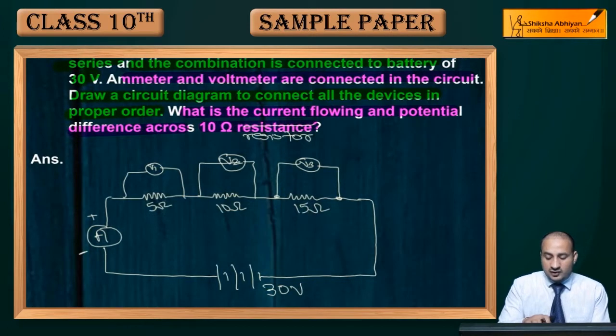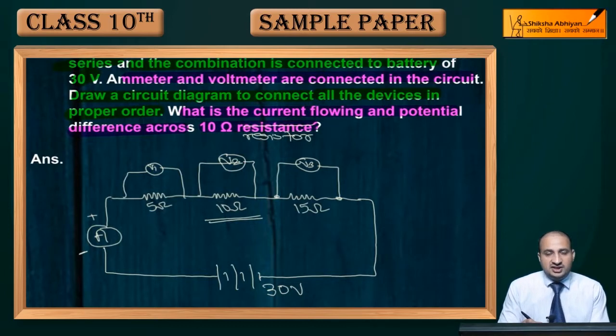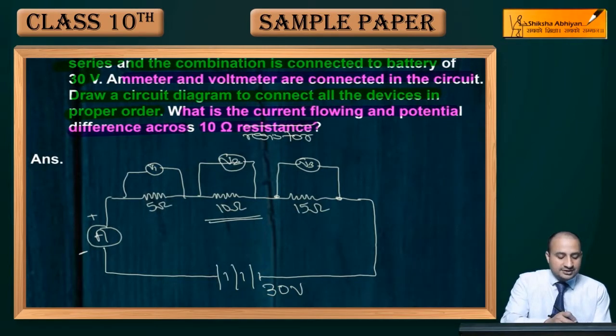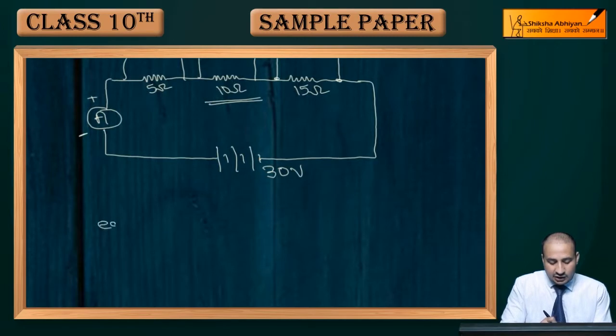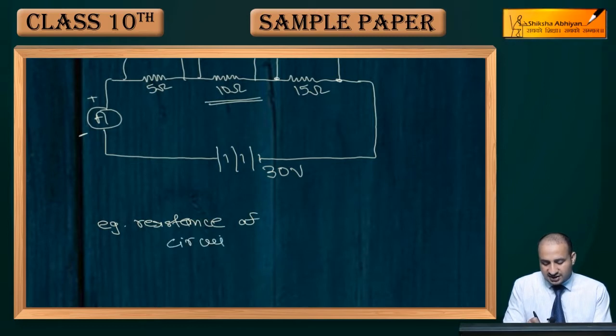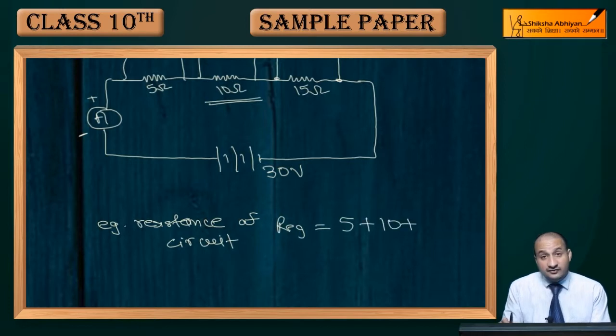So what is the current flowing and potential difference across 10 ohm?